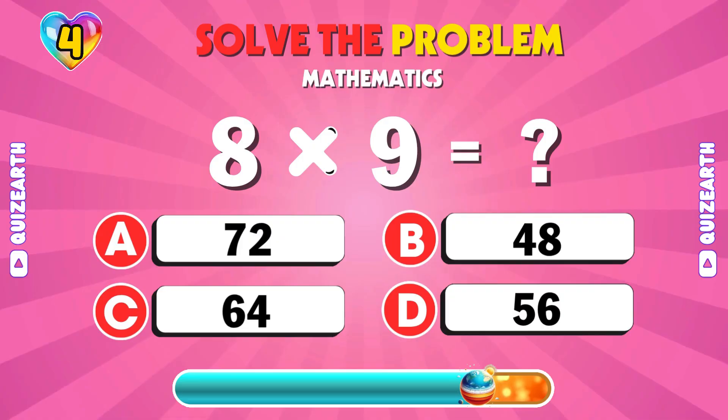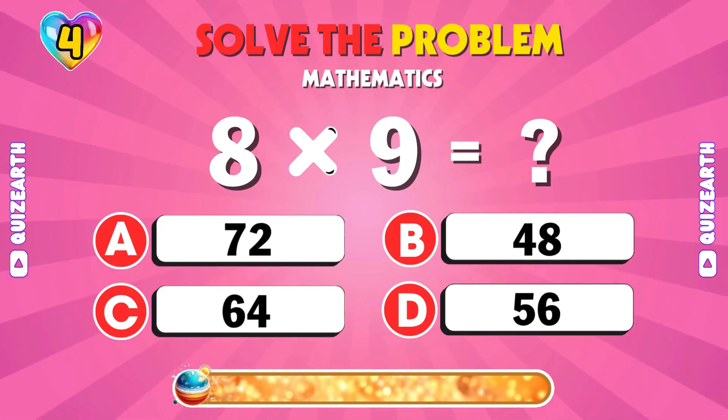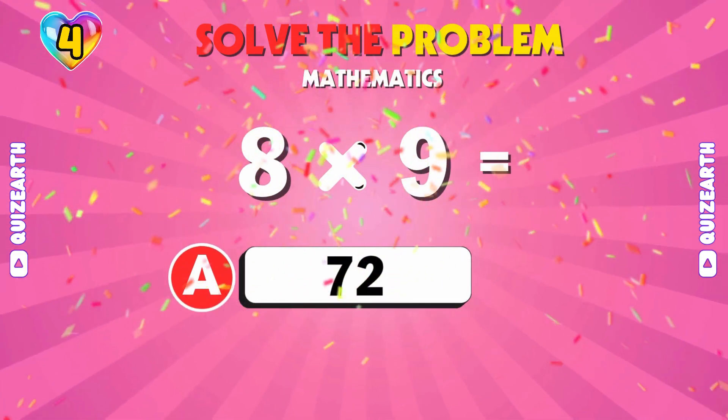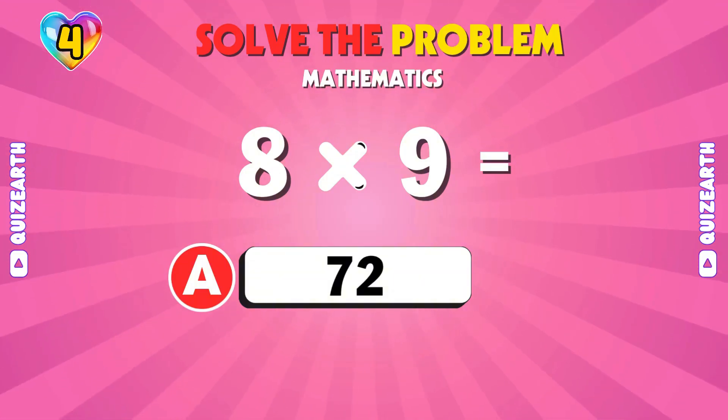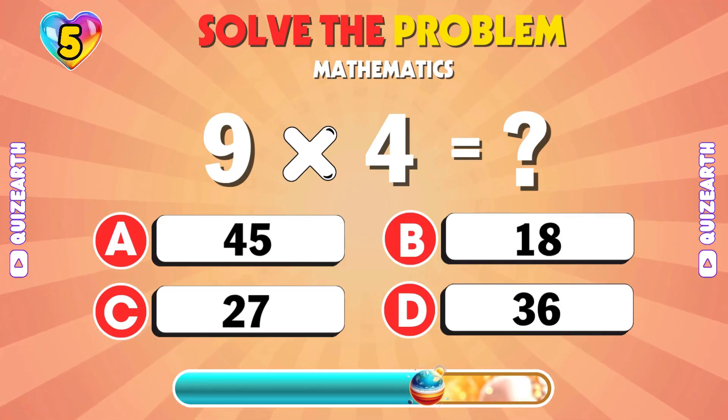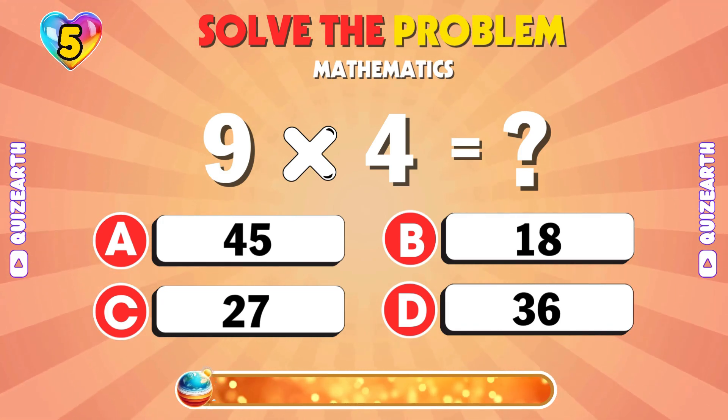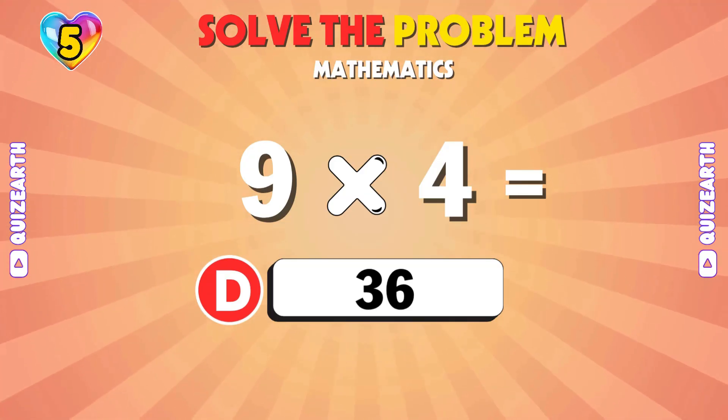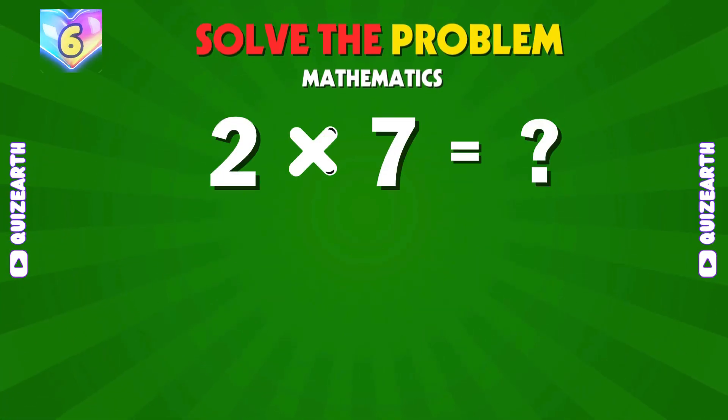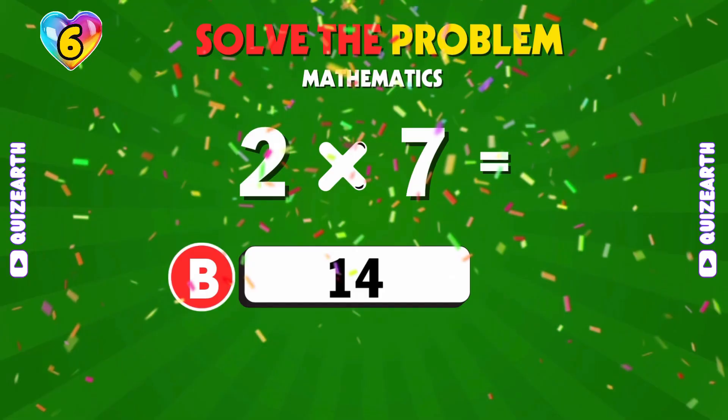Ready for this? 8 by 9? You got it, 72. Speed round, 9 by 4? 36. What's the answer to 2 times 7? It's 14.